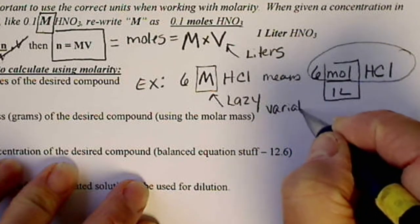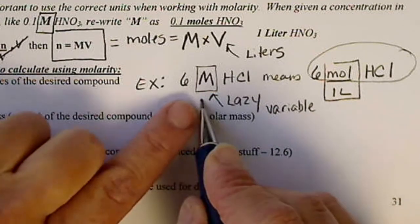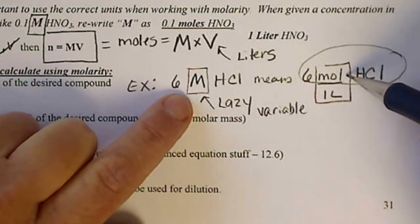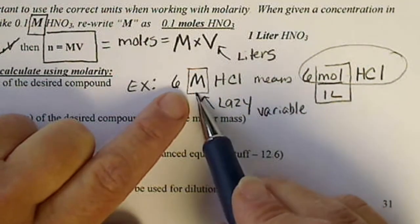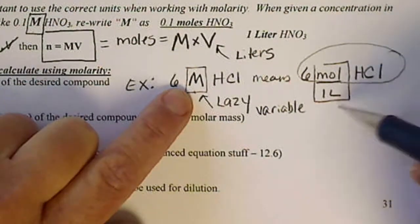M is not a unit. M is another place that we have to remember where to write the mole. So capital M is just a shortcut for writing mole per liter.